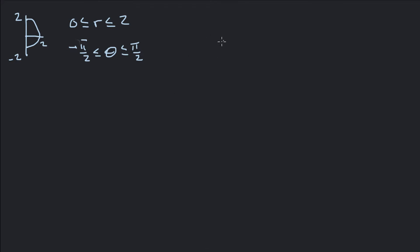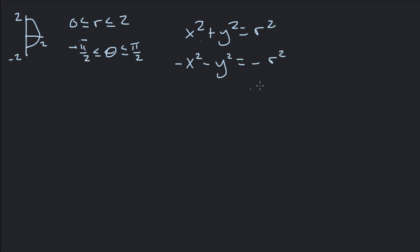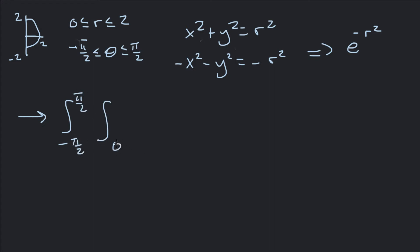Now we switch the integrand. Negative x squared minus y squared equals negative r squared, so our function becomes e to the negative r squared. Plugging everything into our double integral, it becomes the integral from negative pi over 2 to pi over 2, integral from 0 to 2, of e to the negative r squared times r dr d theta.